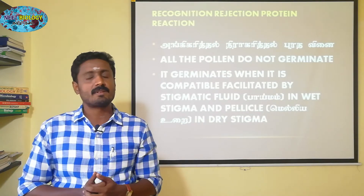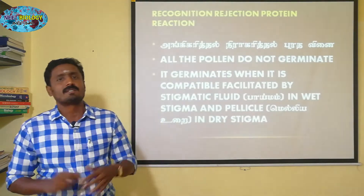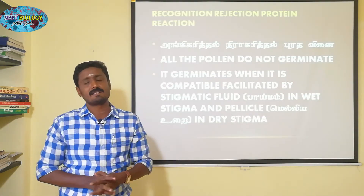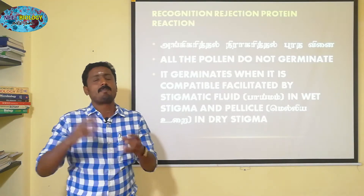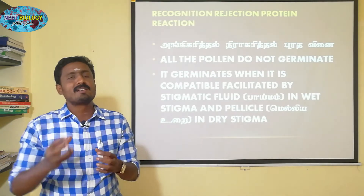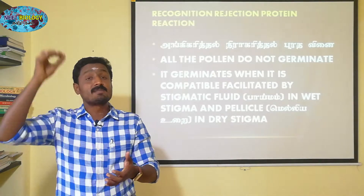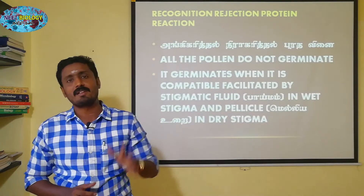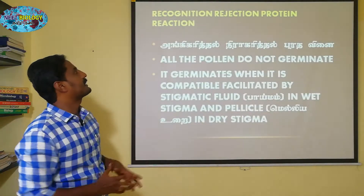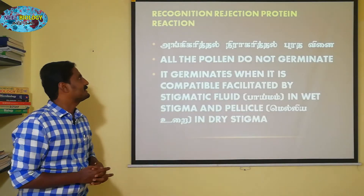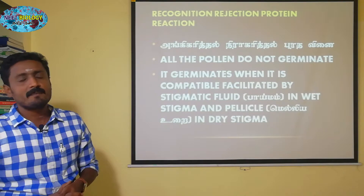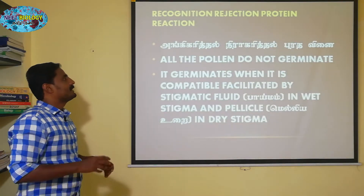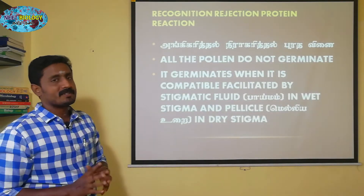Pollen grains are rejected or germinated on the plant. These are the recognition rejection protein reactions. The model for these two major processes is connected.